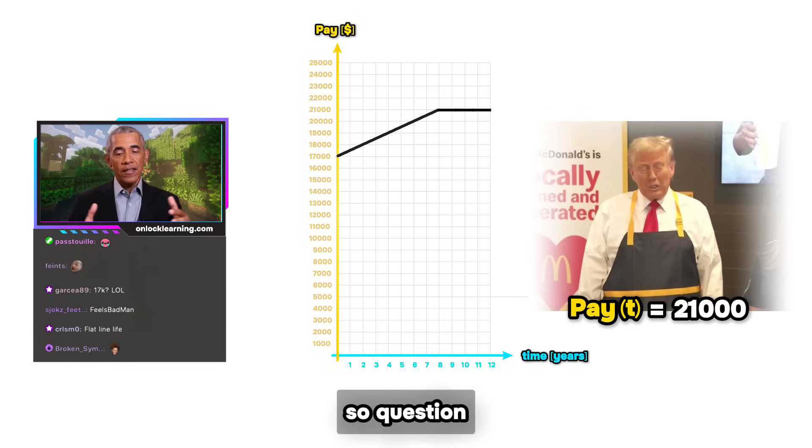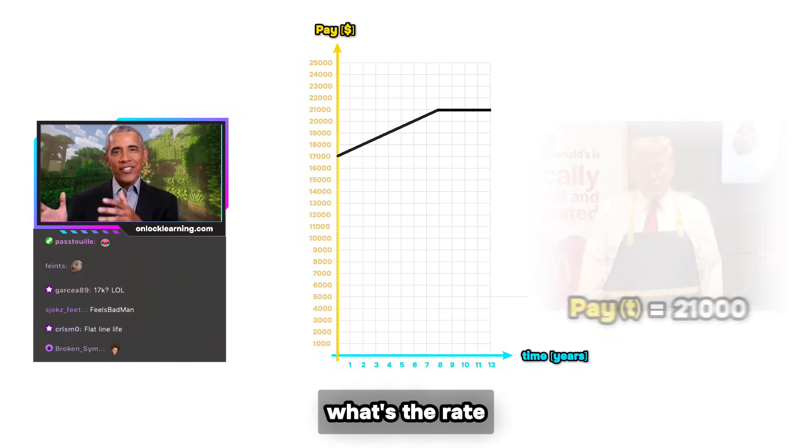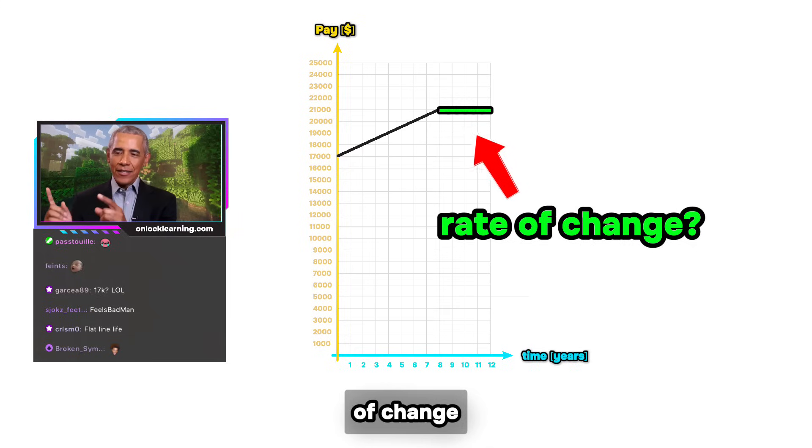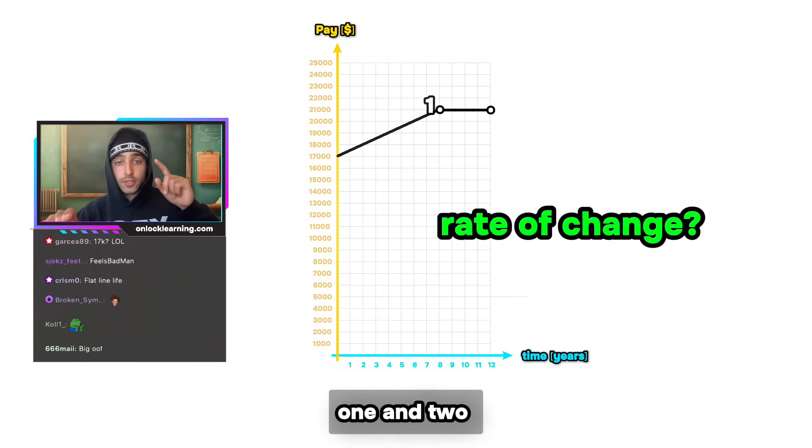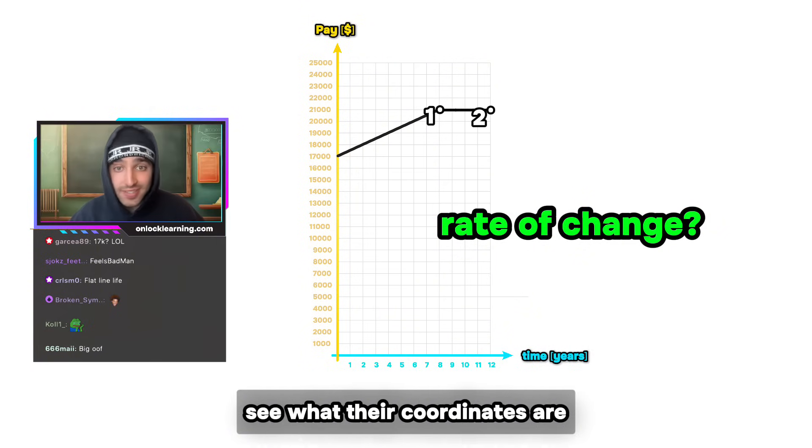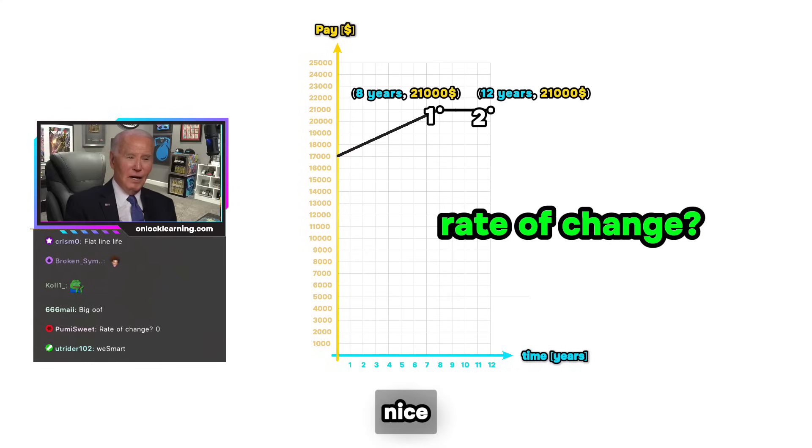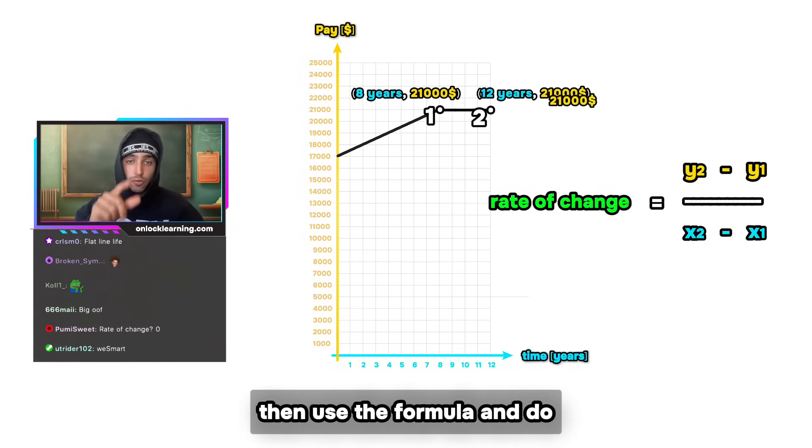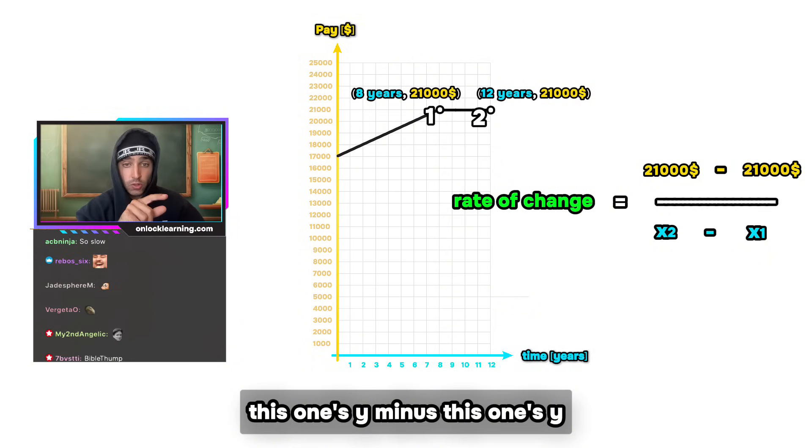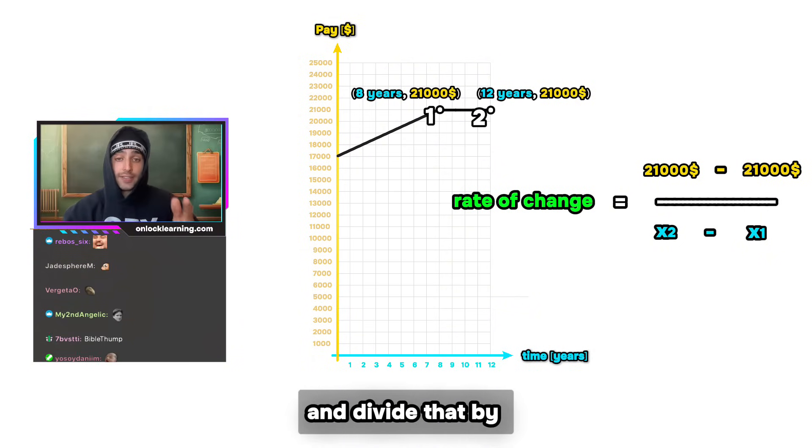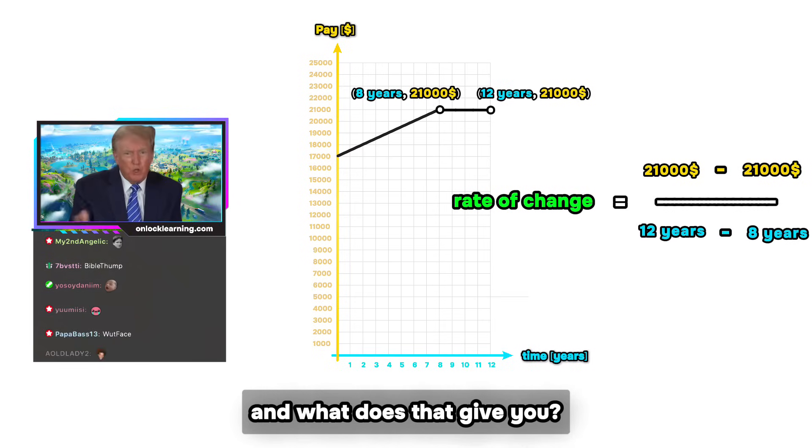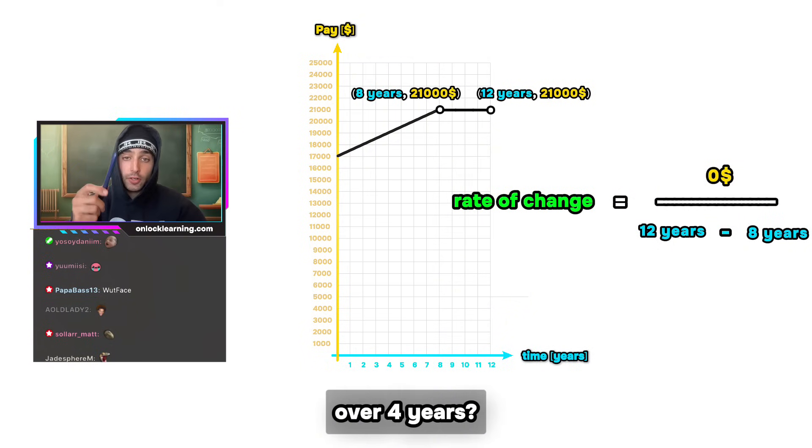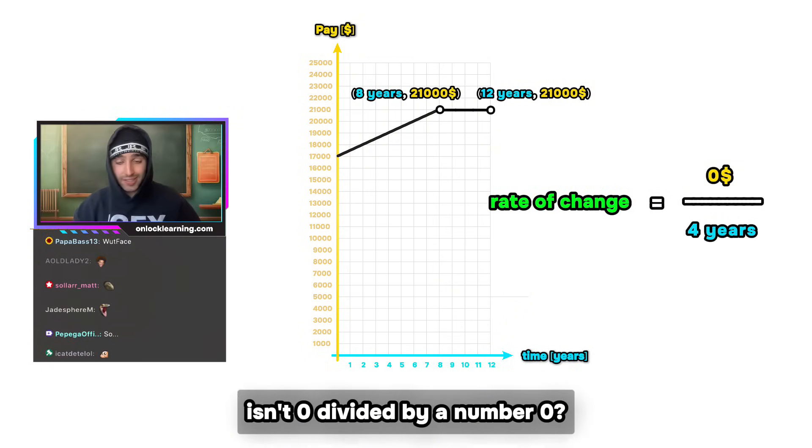So question, what's the rate of change now? Okay, so I'm gonna pick two points on the line, one and two. Yeah. And then see what their coordinates are. Nice. Then use the formula and do this one's y minus this one's y—that's the rise. Yeah. And divide that by this one's x minus this one's x. And what does that give you? Zero dollars over four years, which is—isn't zero divided by a number zero?